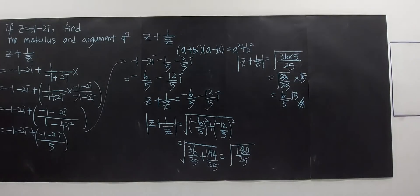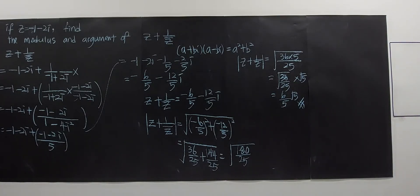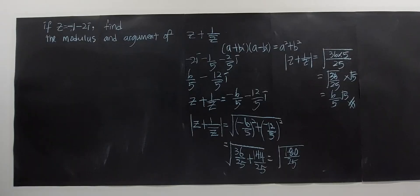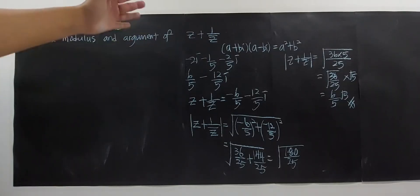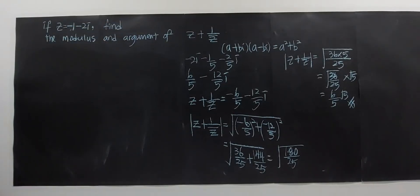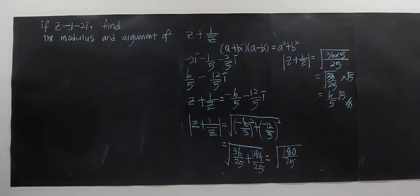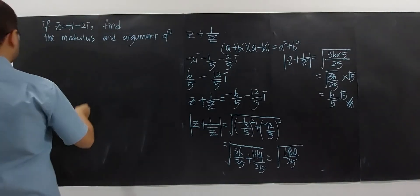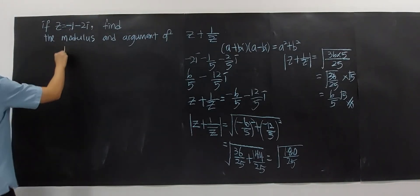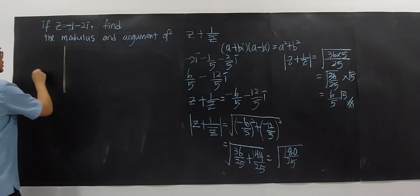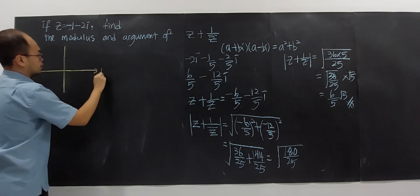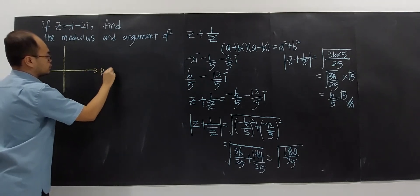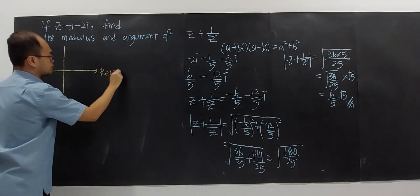Now how do we find the argument? We need the help of an Argand diagram to determine which quadrant this complex number falls in. We draw the real and imaginary axes.